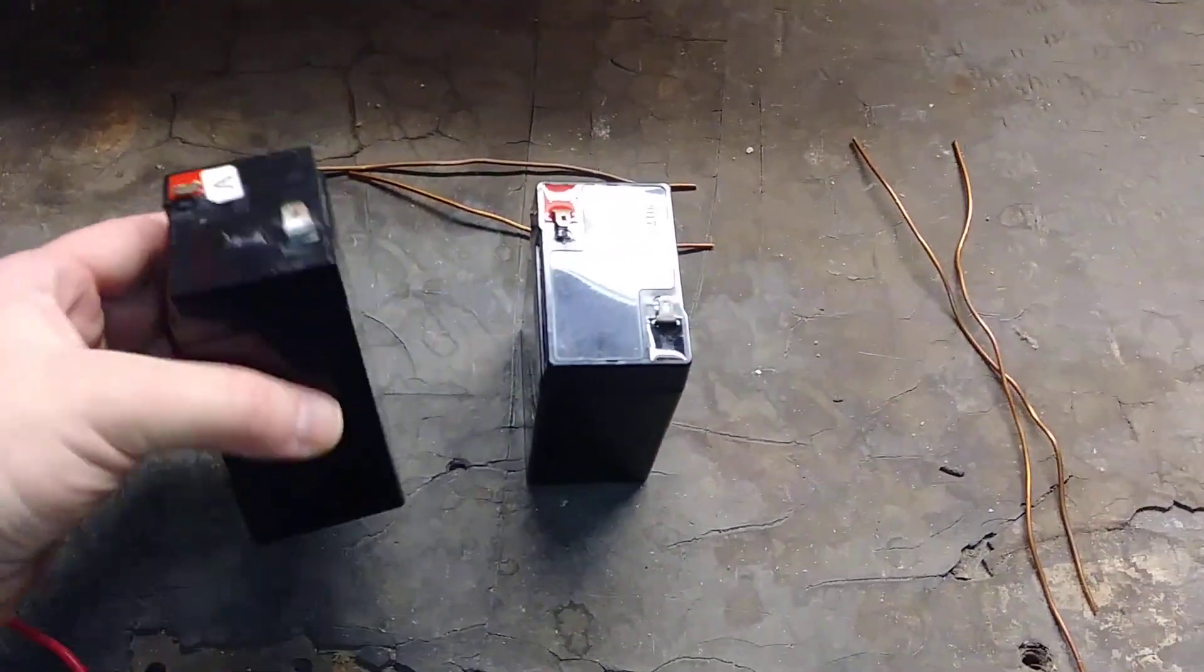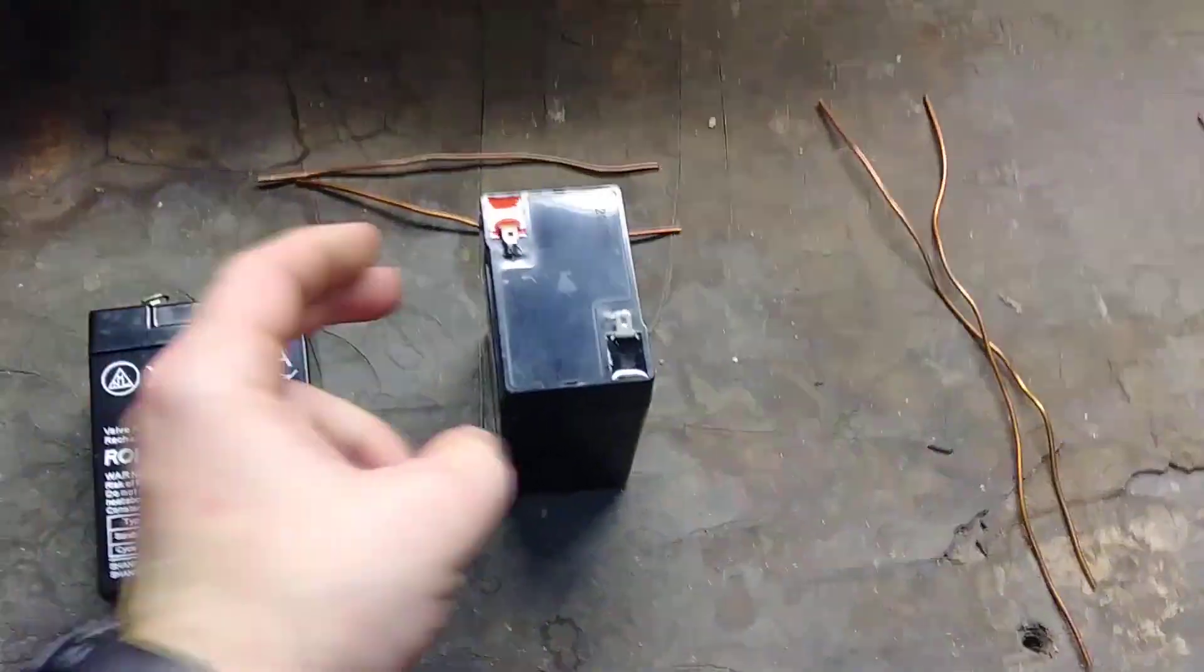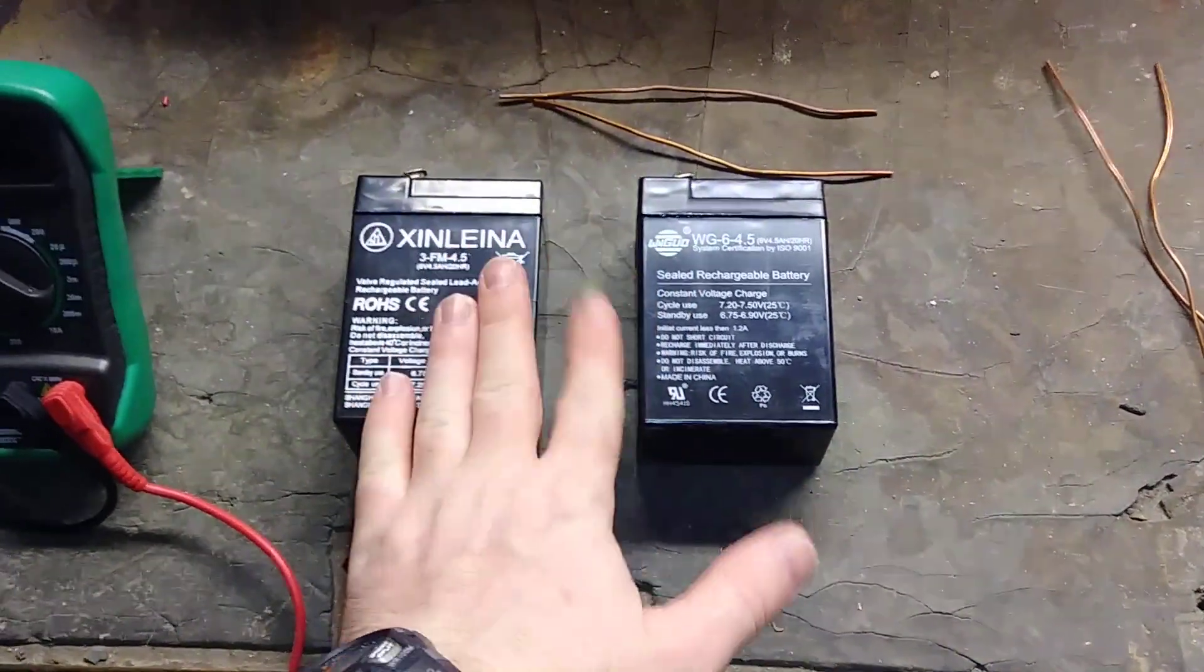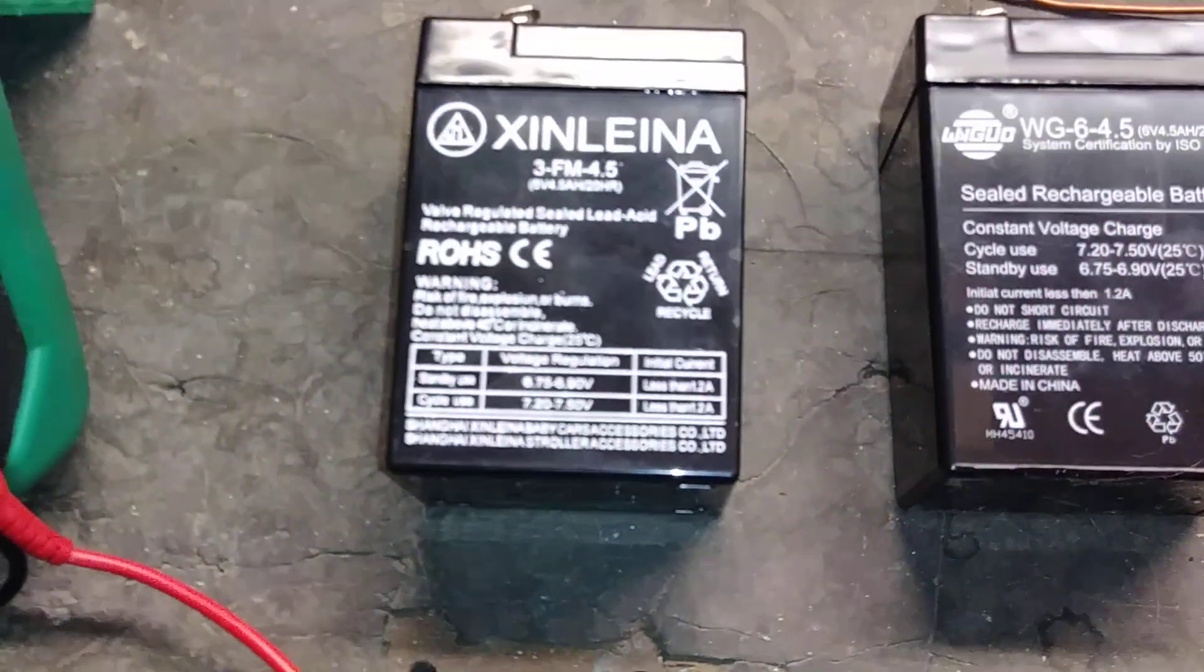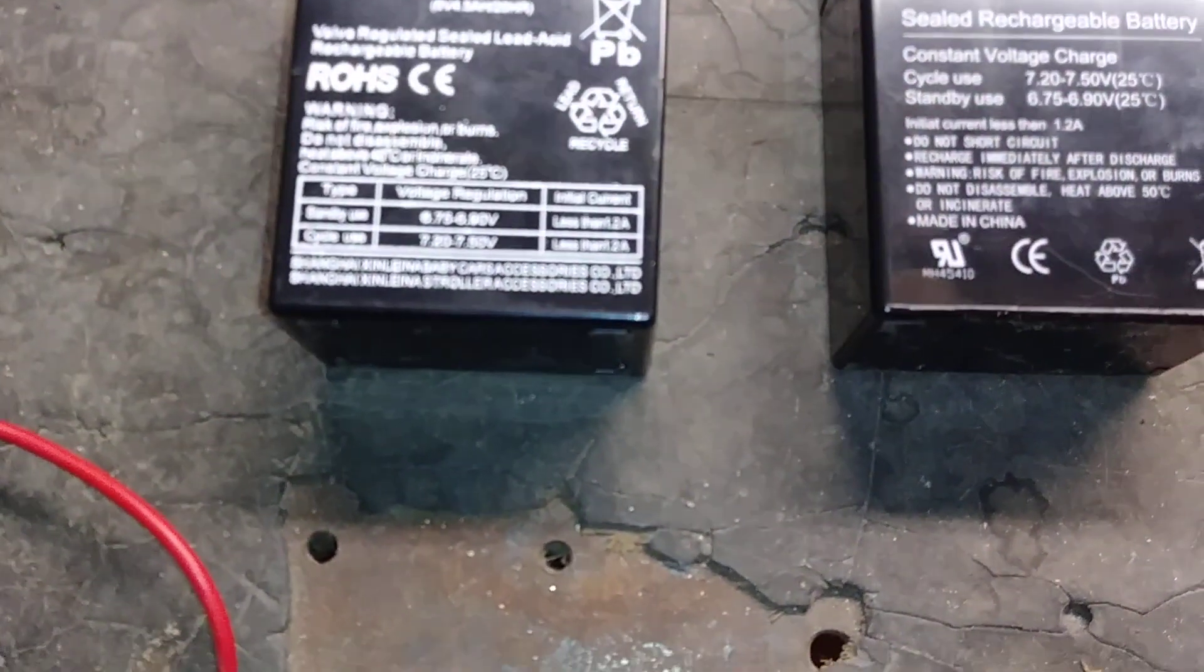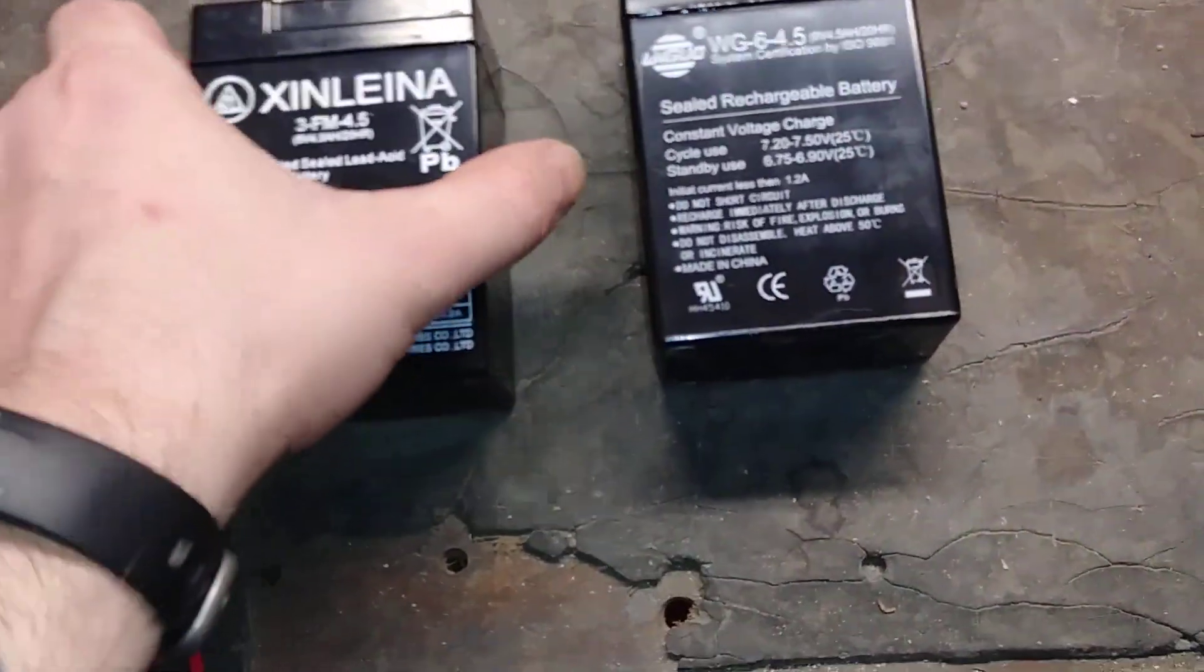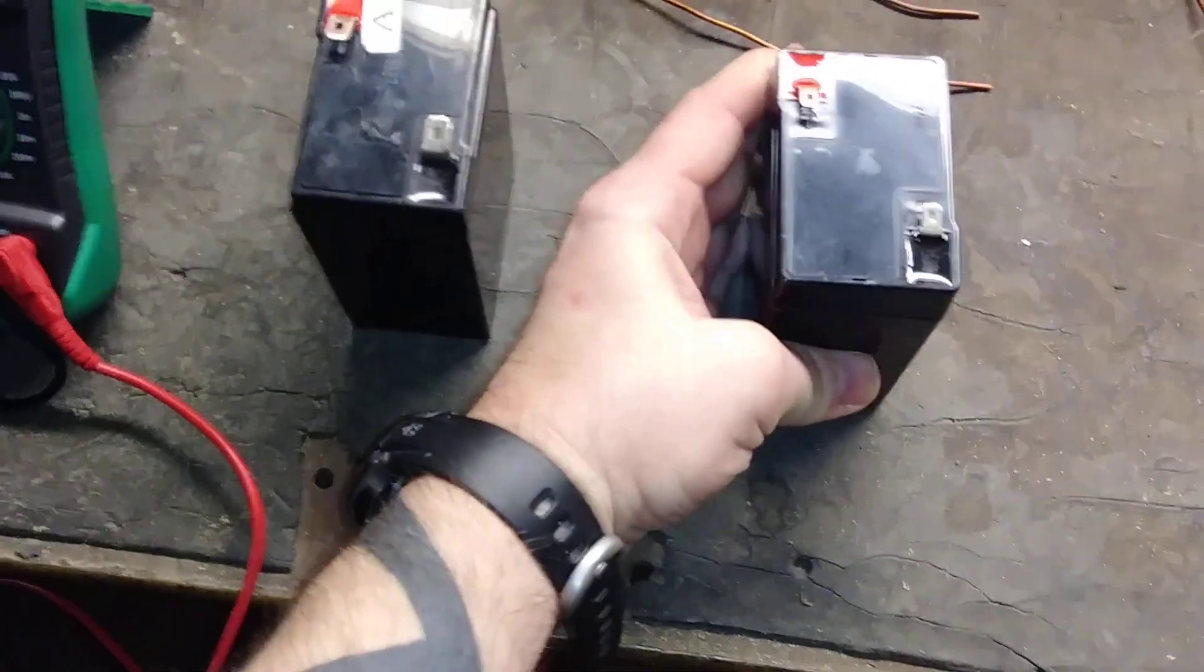These six-volt batteries were pulled out of those little electrical cars that kids drive around. Both of these are six volts with 1.2 amps. They're both the same and can obviously be charged higher.